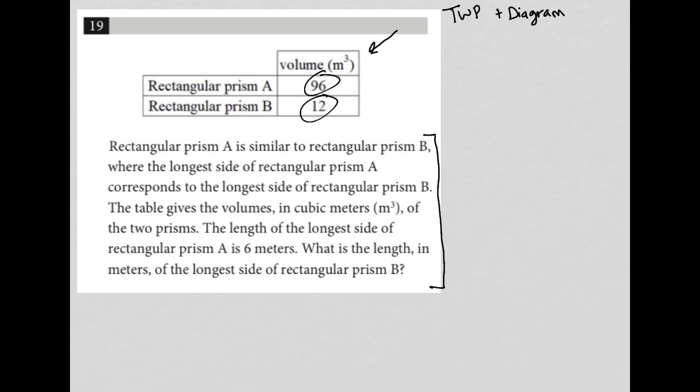So we see the table. We see that we have rectangular prism A, B, and we have volumes for each. A, the volume is 96. Rectangular prism B, the volume is 12.